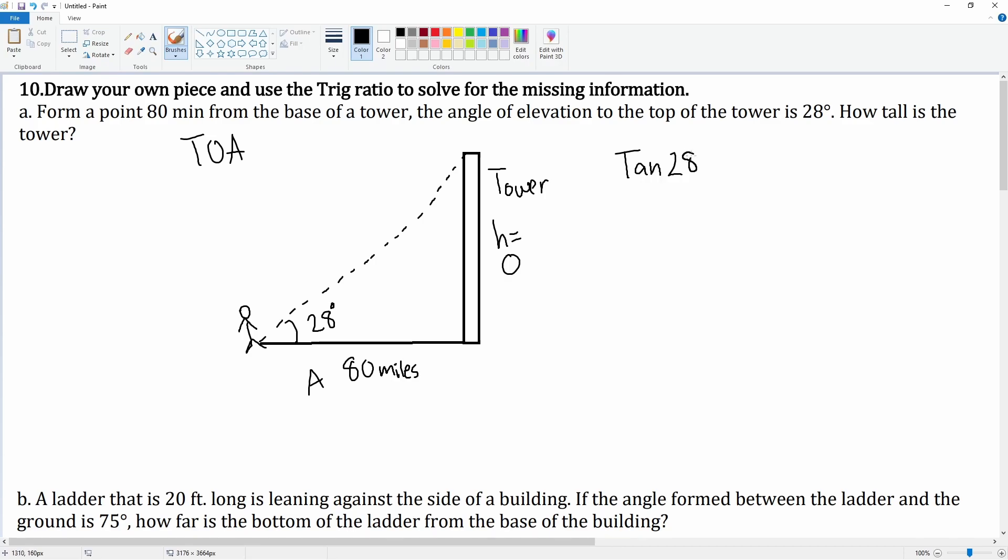So tan of 28 degrees is equal to opposite over adjacent. So tan of 28 is equal to h over 80. So we cross multiply to get 80 times tan 28 which is equal to h.